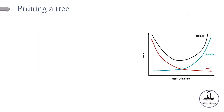So what is pruning a tree? In order to understand what we mean by pruning a tree, let's look at a classification example. Imagine we are plotting the error rate versus model complexity. In decision trees, for model complexity we can think of the number of terminal nodes. The more terminal nodes, it means that the tree is bushier and more complex. So here we have a smaller tree, and here we have a very bushy tree.